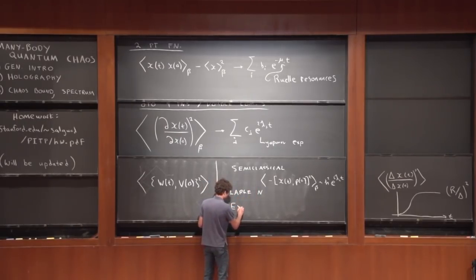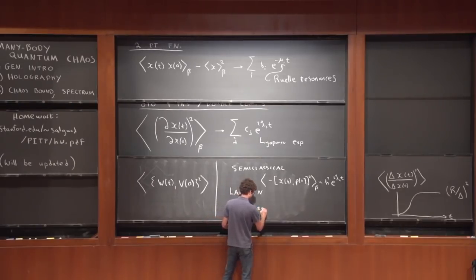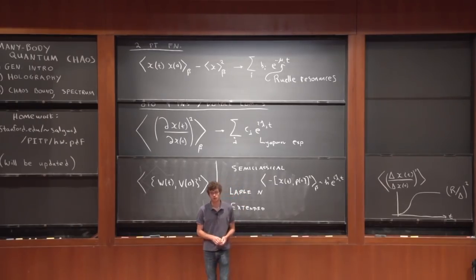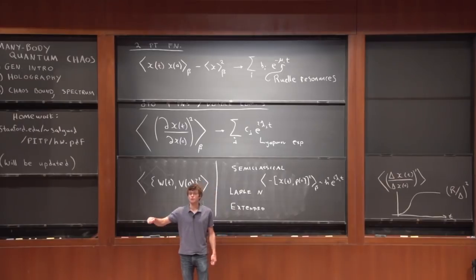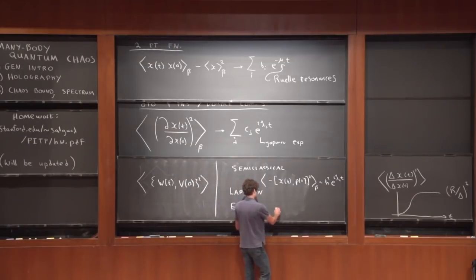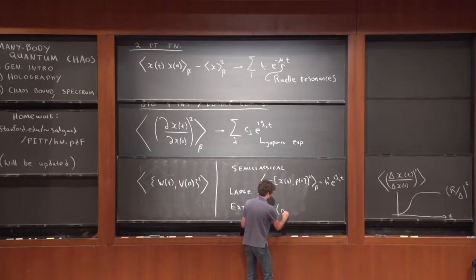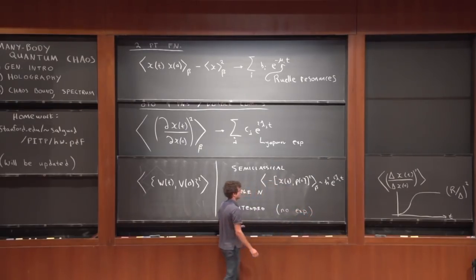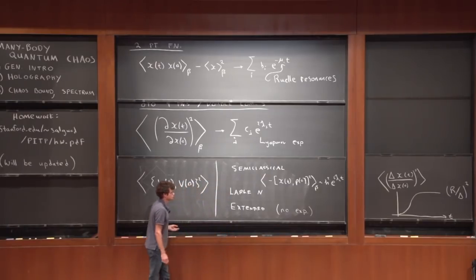Another type of system with a good notion of small perturbations are large N quantum systems, where if we have many particles interacting, an obvious small perturbation is to perturb just one of them and ask how it spreads to affect the entire system. A final example, which we'll discuss today, are extended quantum systems that aren't necessarily large N — again, you ping one part of a large system and ask whether that perturbation later affects the whole system. In this case, it's thought you don't have exponential growth, but you do have growth.